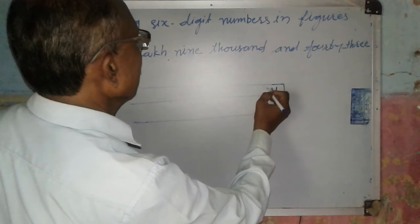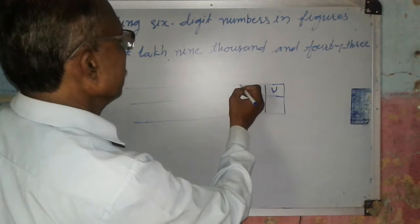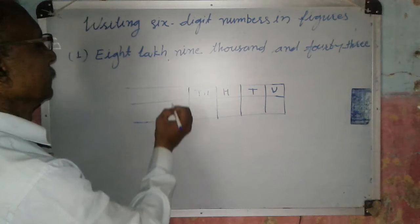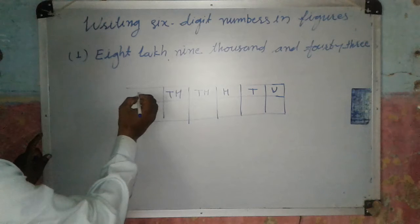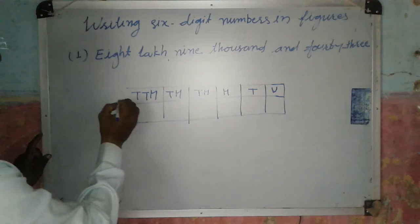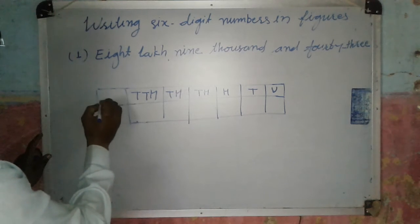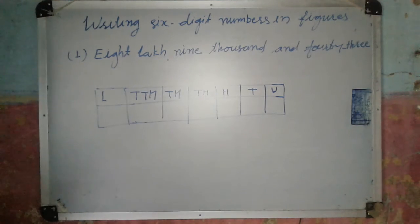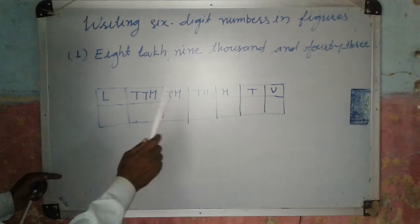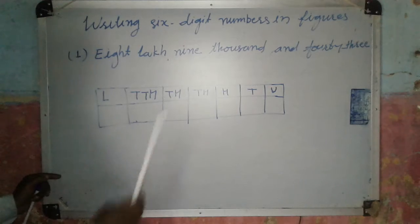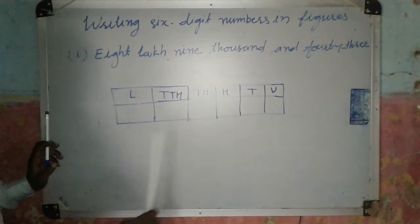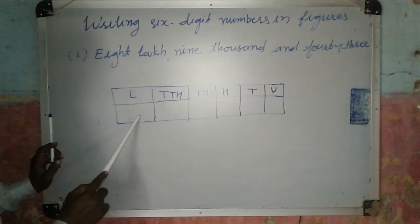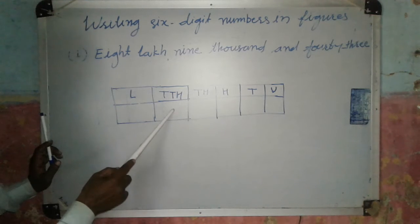The six places are: units, tens, hundreds, thousands, ten thousands, and lakhs. We set up six boxes — 1, 2, 3, 4, 5, 6 — representing units, 10, 100, 1000, 10,000, and lakh respectively.